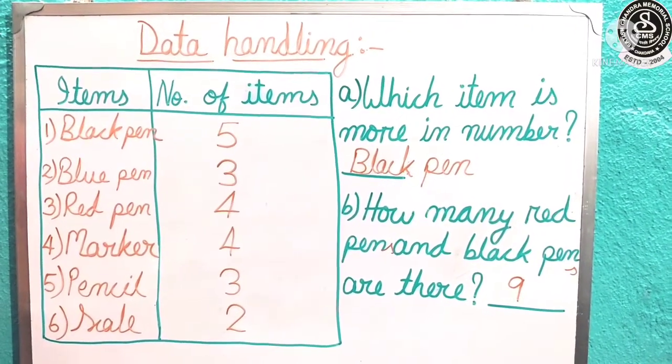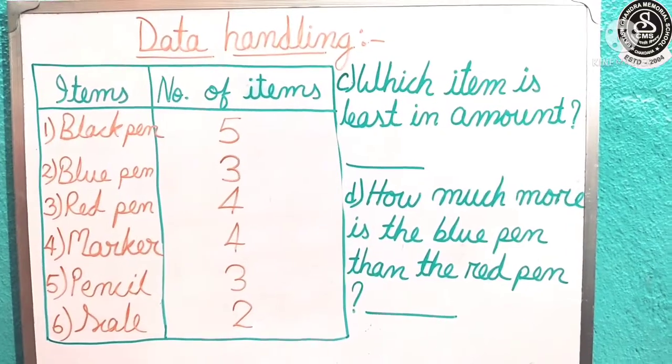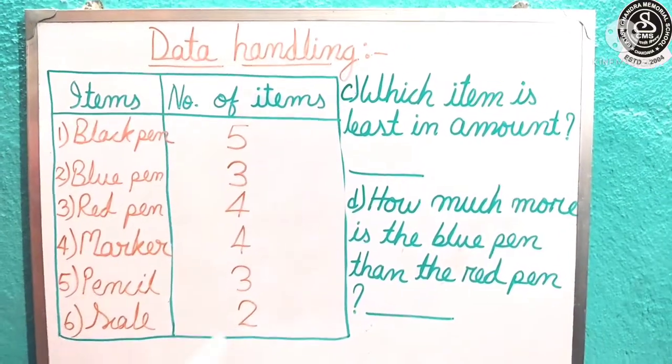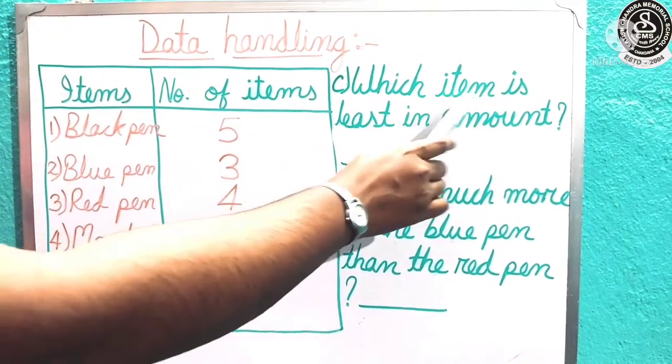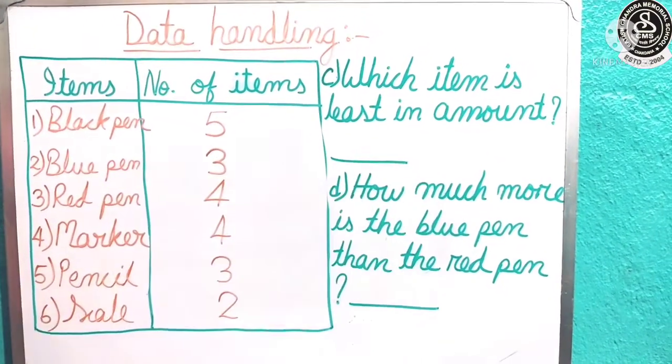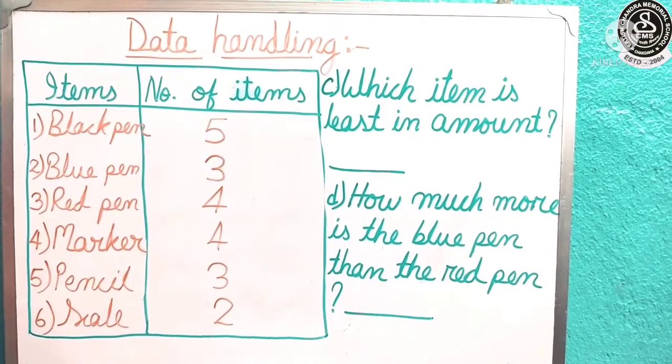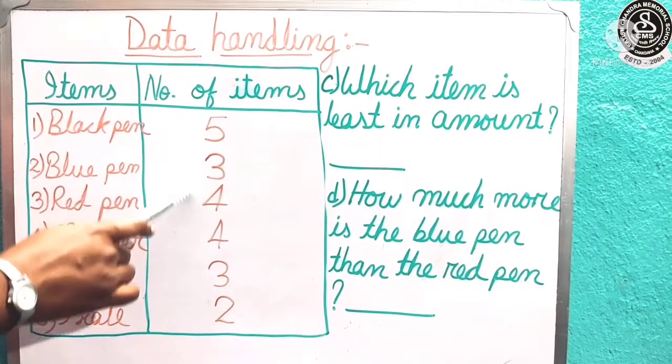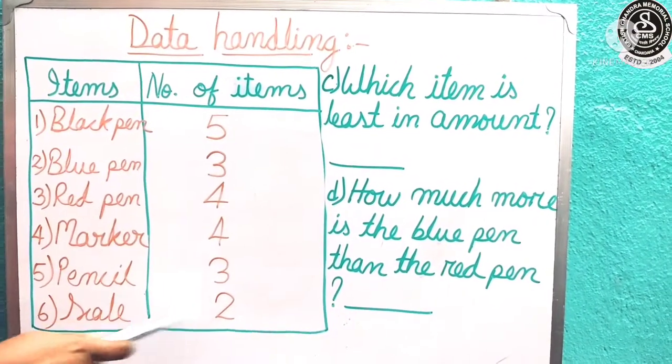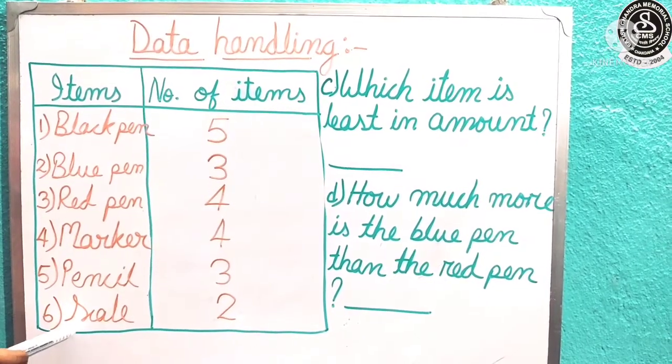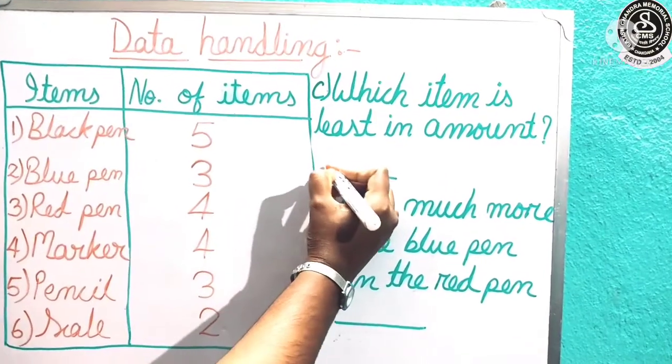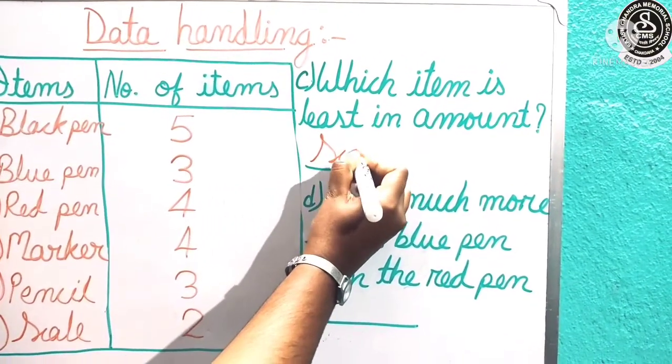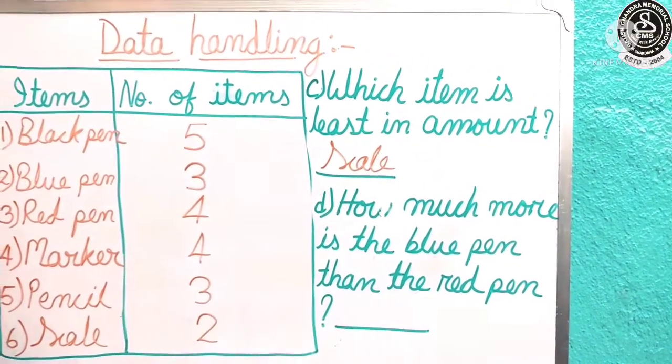Now let us see question number C. Here is your question number C, children. Let us read: Which item is least in amount? Least in amount means very less in number. Which item is very less in number? 2. And what is the name of this item? Scale. Yes, only 2 scale. Which item? We will write the item name, that is scale.